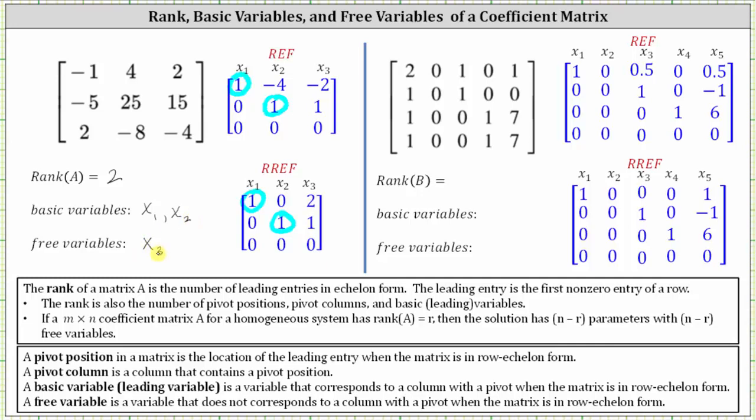Notice how the coefficient matrix has three columns and the rank is two. Three minus two is one, and we have one free variable, which also means the corresponding homogeneous system has a solution with one parameter.